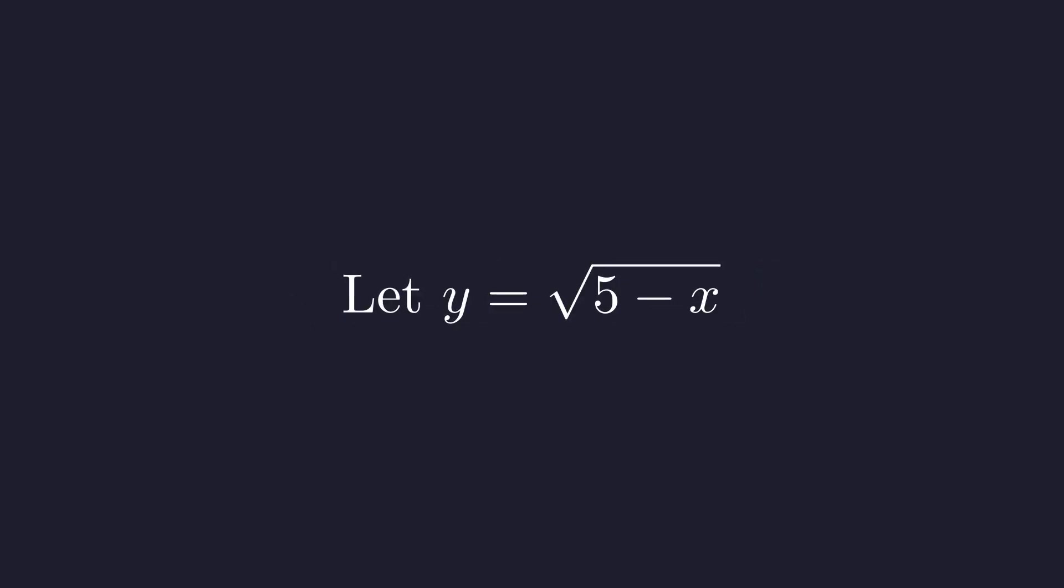We'll call this new variable y. Since y equals the square root of five minus x, we must have five minus x greater than or equal to zero, and y greater than or equal to zero. This gives us y squared equals five minus x. And by rearranging, we get our first equation. The variable x equals five minus y squared.